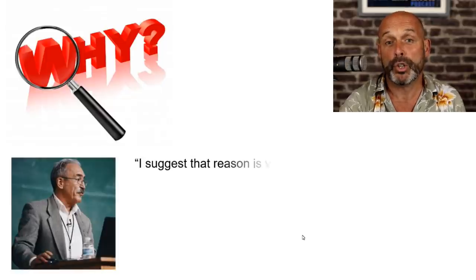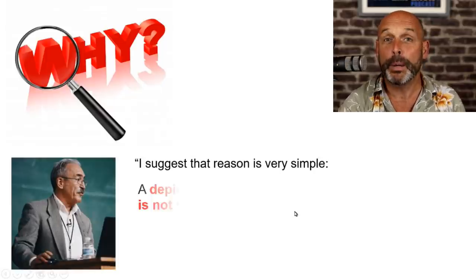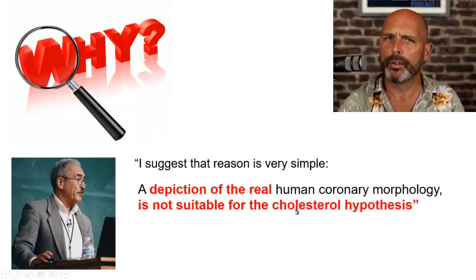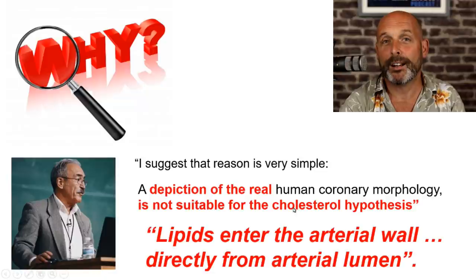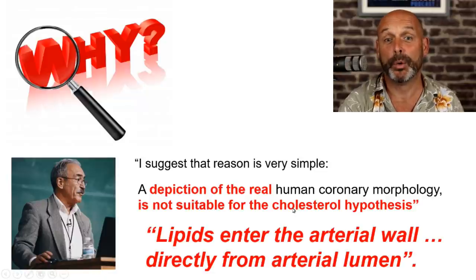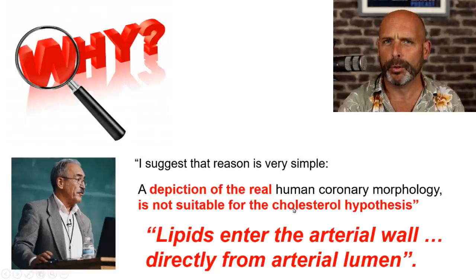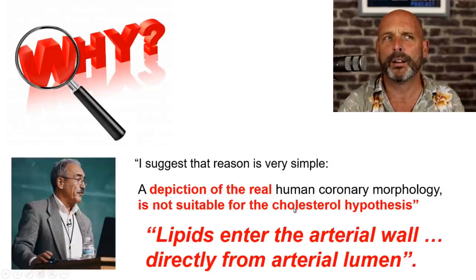Subotin suggests the reason all these diagrams are incorrect is quite simple: a depiction of the real human coronary morphology is not suitable for the cholesterol hypothesis. If you go through the actual real morphology, questions naturally arise — it goes against the concept that lipids enter the arterial wall directly from the arterial lumen. His belief is that all the diagrams are wrong because it fits better with the dogma.